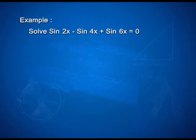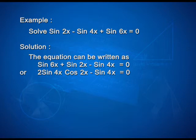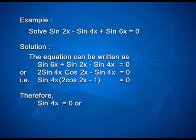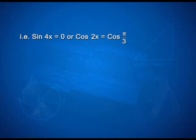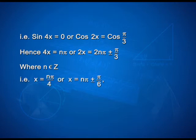One more equation: sin 2x − sin 4x + sin 6x = 0. Rewriting as sin 6x + sin 2x − sin 4x = 0, we get 2sin 4x cos 2x − sin 4x = 0, that is sin 4x(2cos 2x − 1) = 0. Therefore, sin 4x = 0 or cos 2x = 1/2 = cos(π/3). Hence, 4x = nπ or 2x = 2nπ ± π/3, where n ∈ ℤ. That is, x = nπ/4 or x = nπ ± π/6, where n ∈ ℤ.